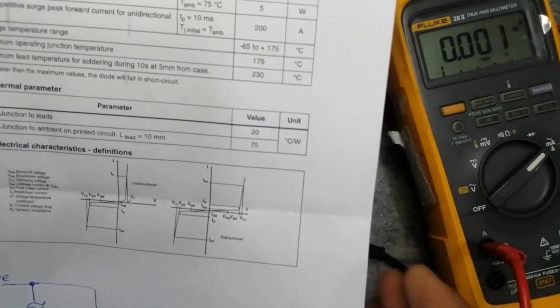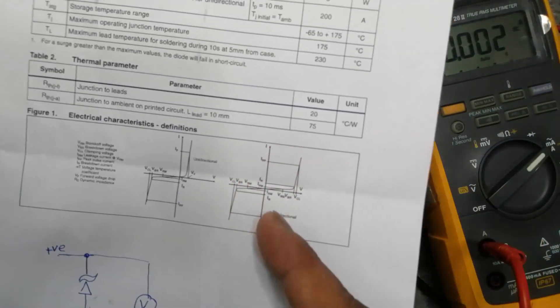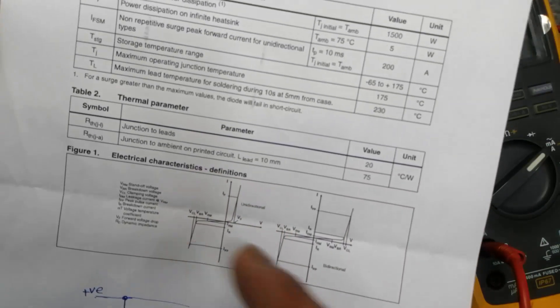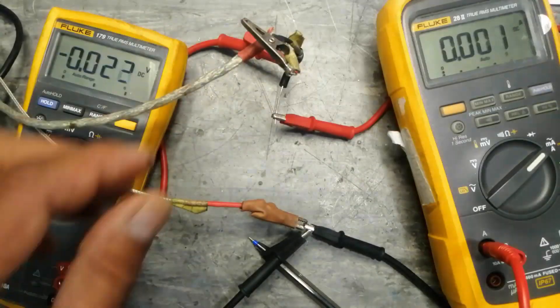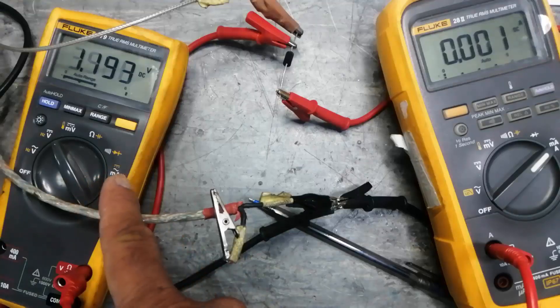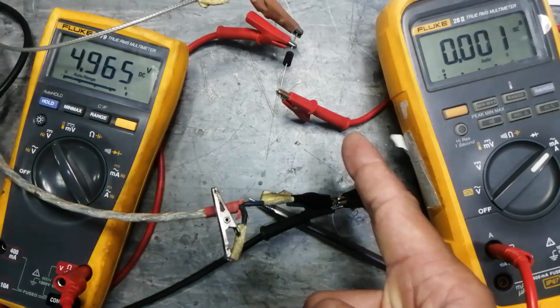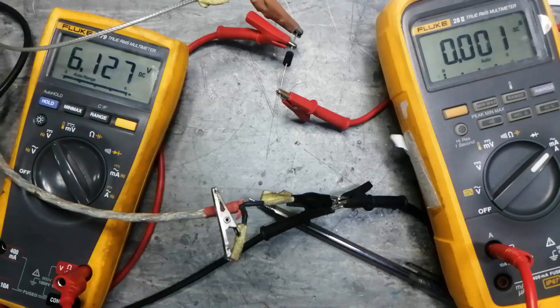In an upcoming video we will discuss bi-directional TVS diodes. This is working in a simple DC circuit as protection. In reverse bias, after 12 volts it will start conduction because it is always used as protection.